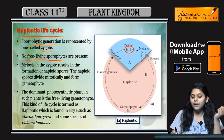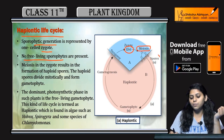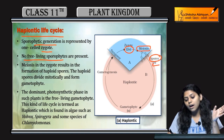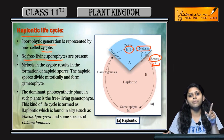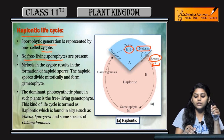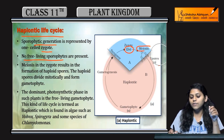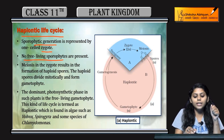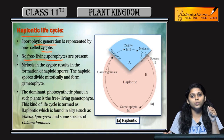Meiosis occurs in the zygote. The spores produced are N, or haploid, because reductional division happens in meiosis, producing haploid spores from the diploid (2N) zygote.